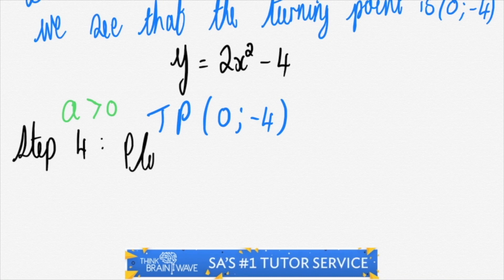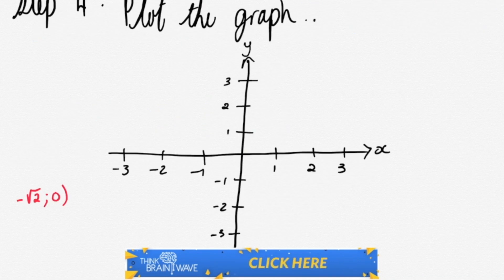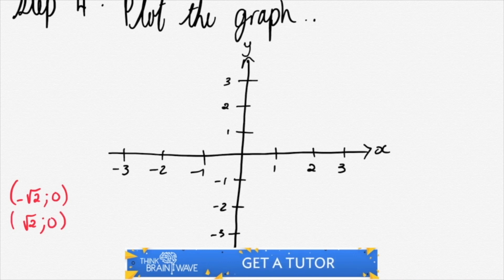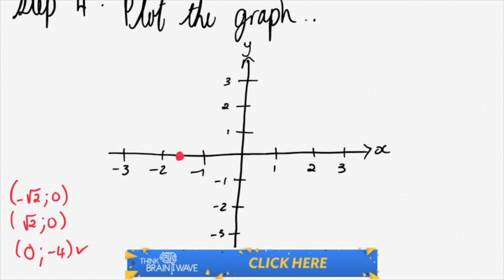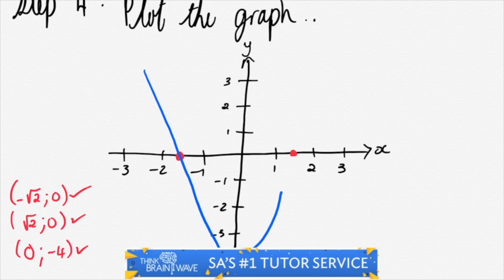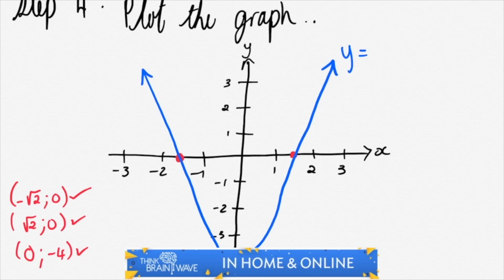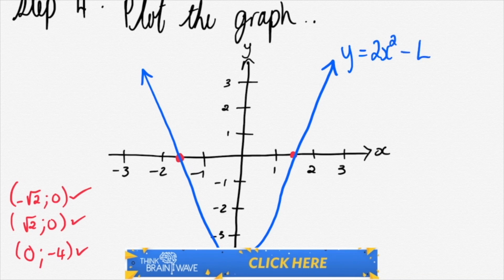Step 4. We need to plot this graph. We know that we've got minus square root of 2 and 0 as one x-intercept, and square root of 2 and 0 as our other with a positive sign in front. We also know that our y-intercept is 0 minus 4. So let's plot these three points. There's 0 minus 4, that one's done. We then do minus square root of 2 and 0, that one's done. And then we do the square root of 2 and 0, that one's done. And we plot our graph. We say our graph is called y and it's equal to 2x-squared minus 4.